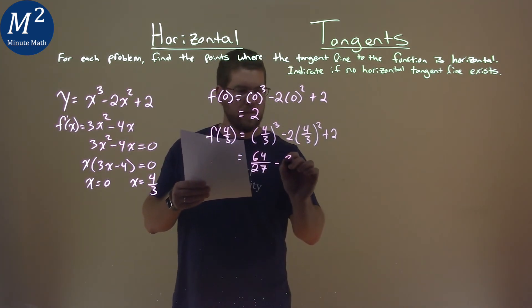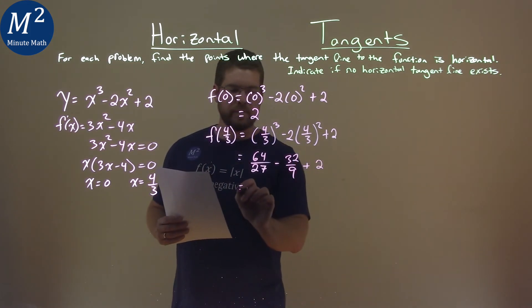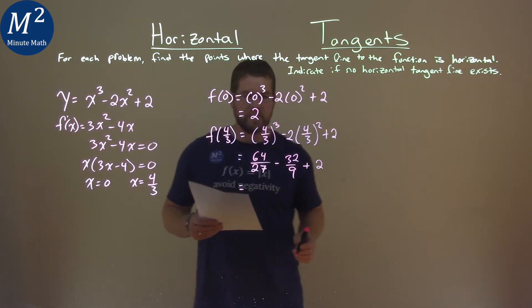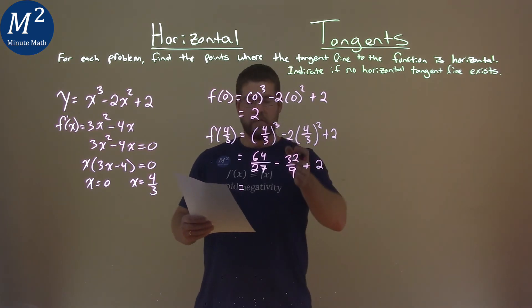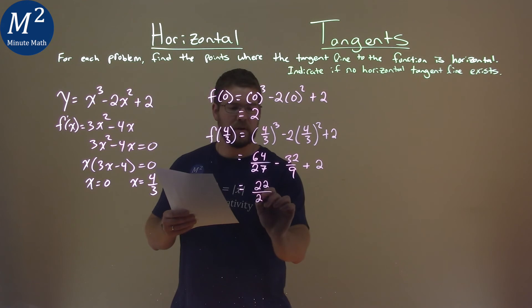or minus signs out there, 32 over 9, and we have it plus 2. We add all that up. 64 over 27 minus 32 over 9 plus 2 is 22 over 27.